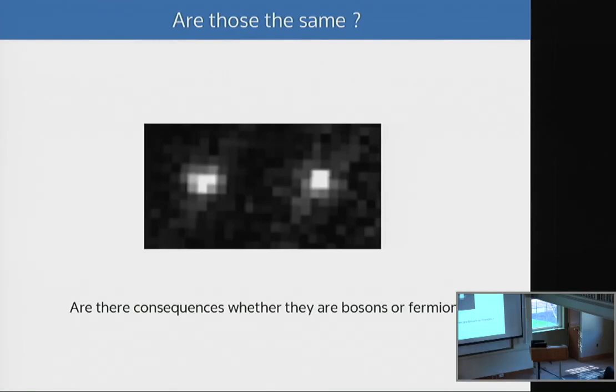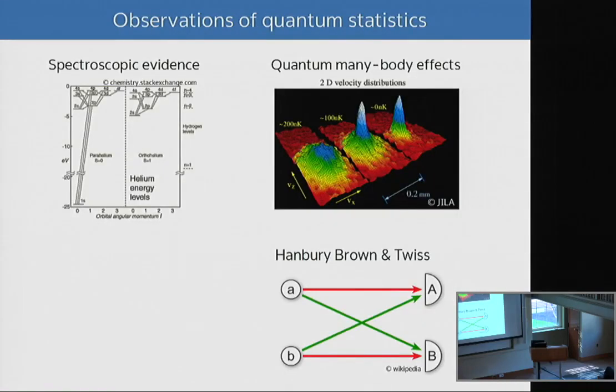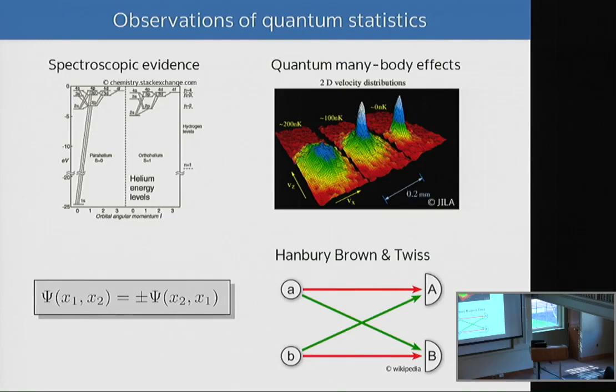For instance, you may be curious to know whether calcium-40 is a boson or fermion. Can I figure that out experimentally? This basically goes into the direction of quantum statistics. Quantum statistics is really important. It basically permeates all of physics.